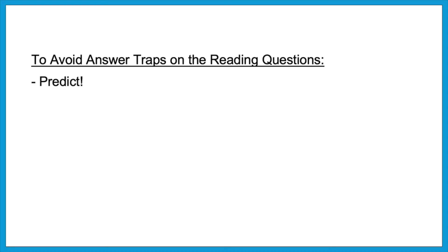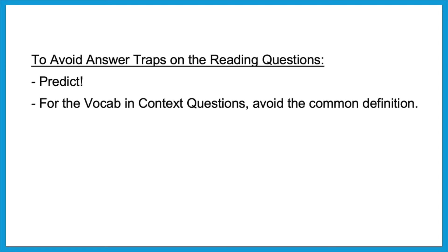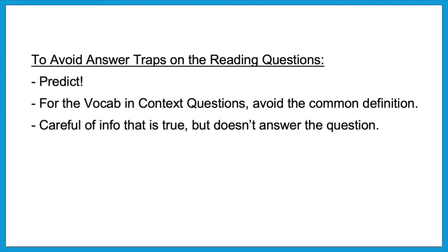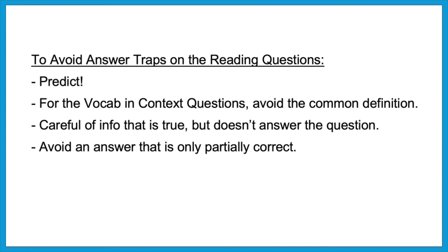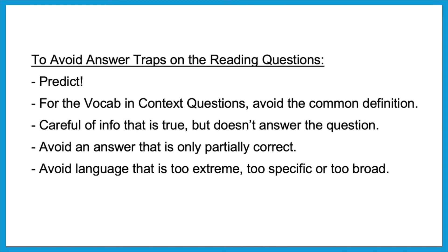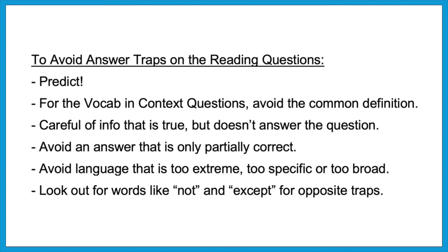To recap: always try to predict your own answer before looking at the choices — it helps you avoid traps. For vocab and context questions, avoid the common definition, read the word back into the sentence, and jump to these if you're short on time. Be careful when they give information that's true but doesn't answer the question — especially on paired passages. Avoid partially correct answers, language that's too extreme, too specific, or too broad, and watch for words like 'not' and 'except.' As you work on practice sections, notice how many of these traps appear. Stay diligent about predicting and you'll zero in on the right answer much more quickly.